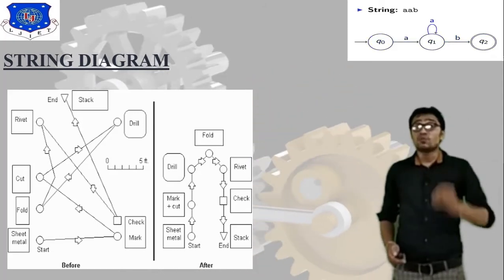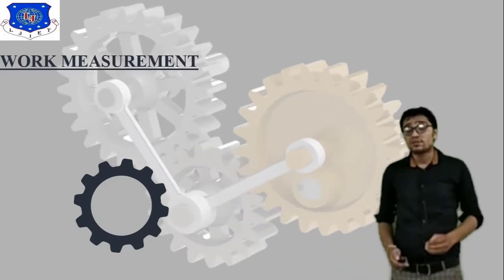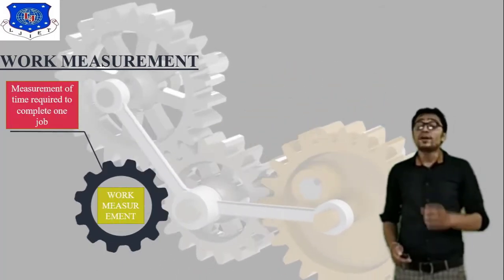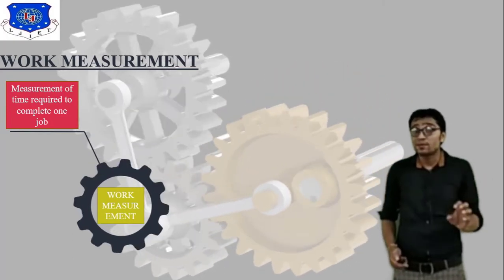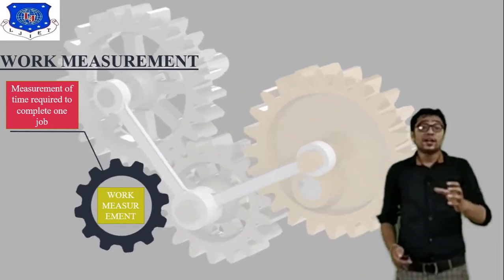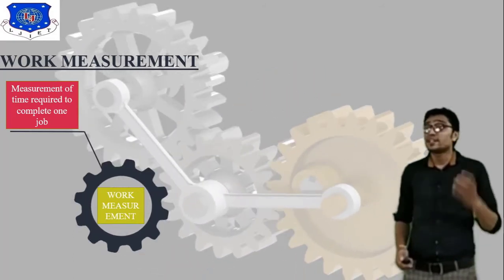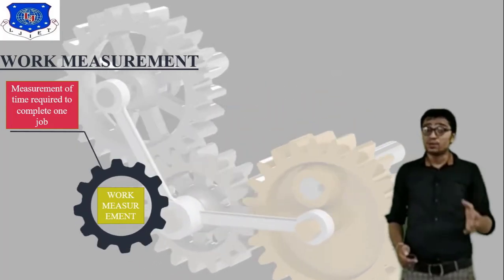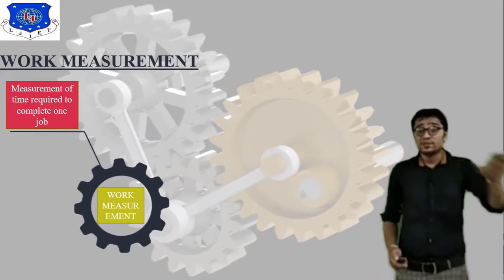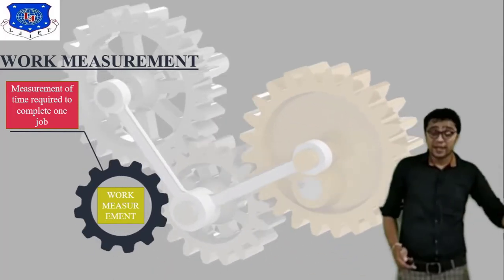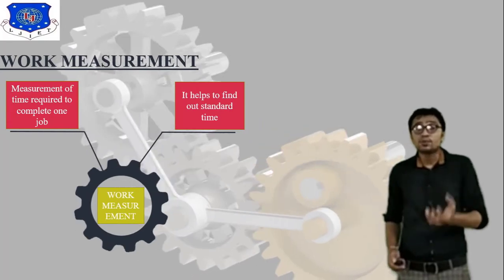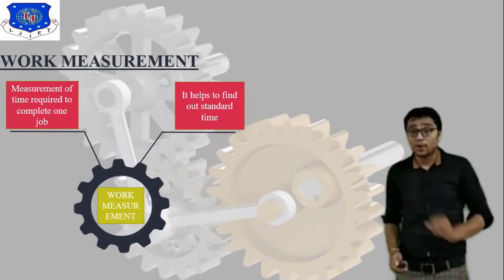Moving on to work measurement: it is the measurement of time required to complete one job. For example, a job with three different operations — drilling, grinding, and lapping or finishing — the overall timing after all operations is called work measurement. Its purpose is to help find out the standard time of your product.